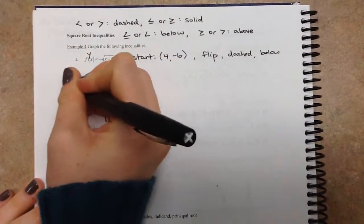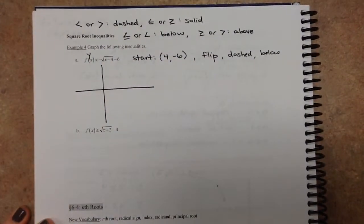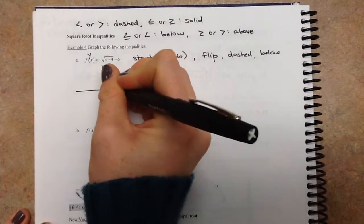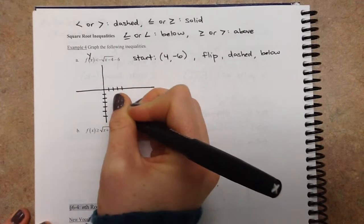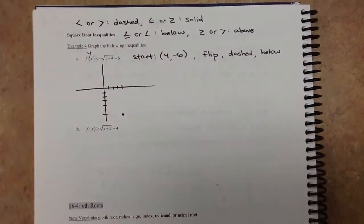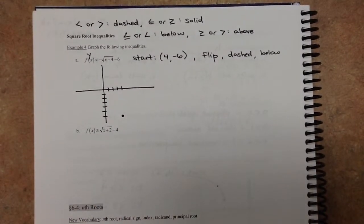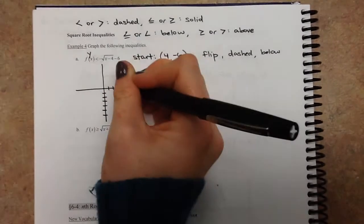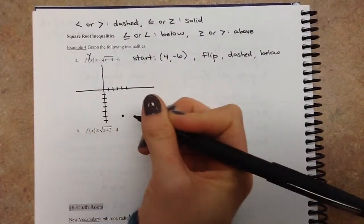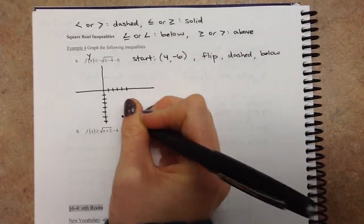So, set up right here, we've got 4, negative 6. So that is your starting point right there, and then you are flipping upside down. So remember what that negative 1 means, is you can go down 1, over 1, and then plot a new point.